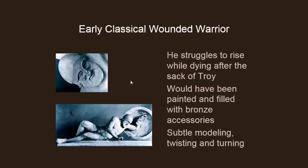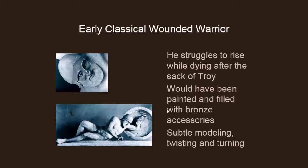This is an early classical wounded warrior from the Temple of Aphaia — a good example. Remember we talked about pediment sculpture and the construct of the dying warrior in the corner of the pediment. This particular pediment depicts the sack of Troy, and this warrior is struggling to rise. He would have been painted and filled with bronze accessories, which have been looted. The corner of the pediment would be down by his foot, and you can see a very subtle twisting, modeling, and turning — a great deal more movement than in the early Kouros figures.